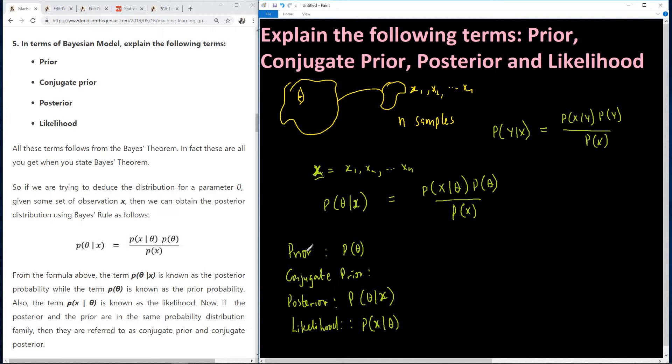So we have prior, we have posterior, we have likelihood. This prior is actually called conjugate prior if it comes from the same distribution with the posterior. So if it comes from the same distribution, that is why it should be called conjugate prior.